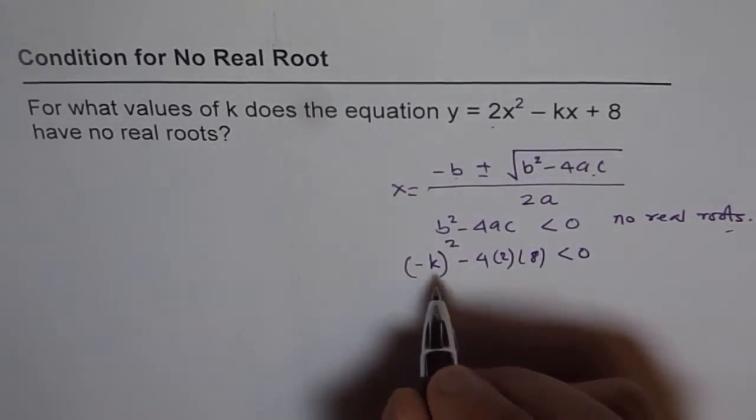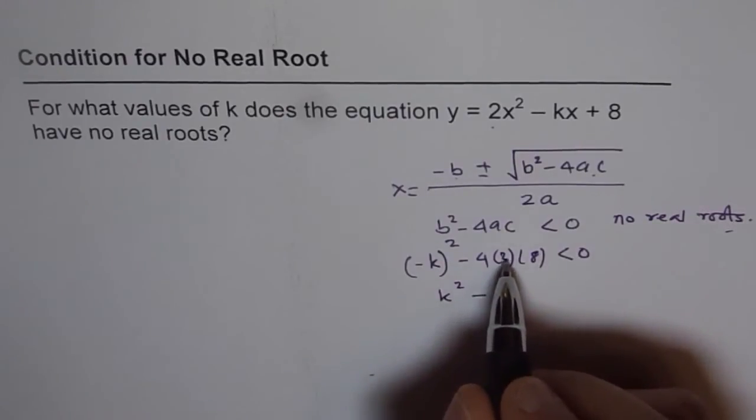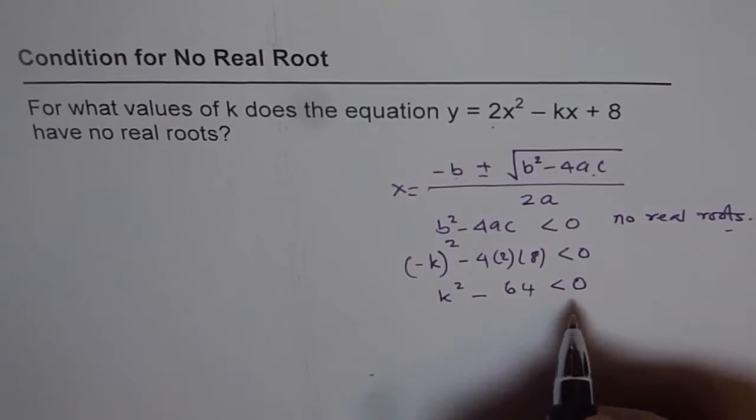That should be less than 0. That means k² - 4 times 2 is 8, 8 times 8 is 64, so k² - 64 < 0. You need to solve this inequality.